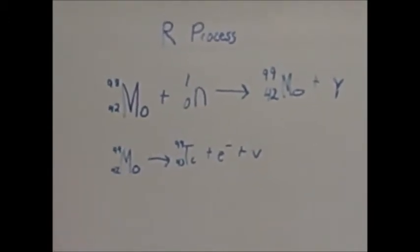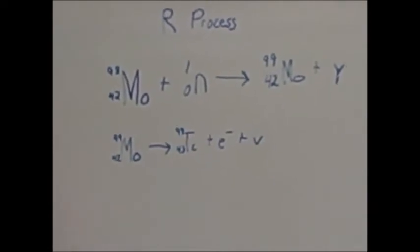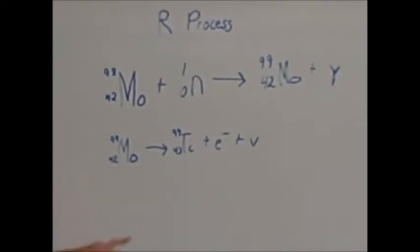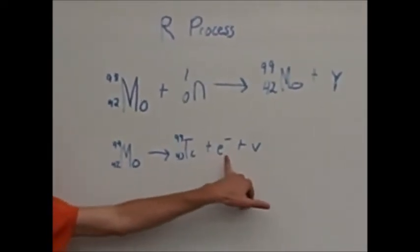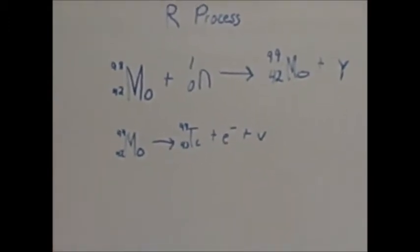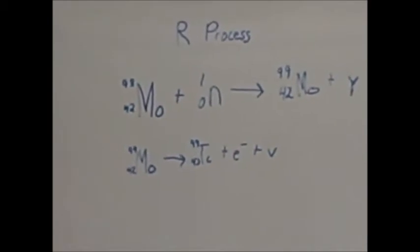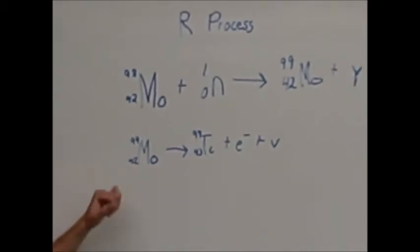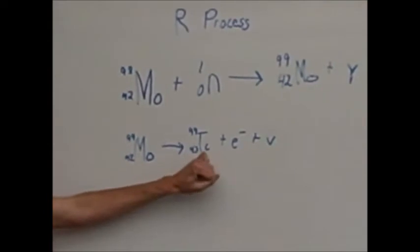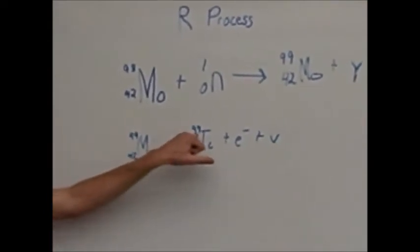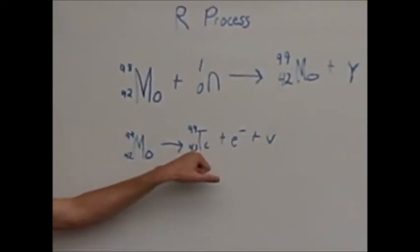After a while, these isotopes will become unstable and will need to form more stable. To do this, they release a particle called a beta particle. A beta particle is a form of radiation, but it's just a high-speed electron relieving the particle. Now, when this happens, a new element is formed that has the same mass number as the old element, but an atomic number of one higher.